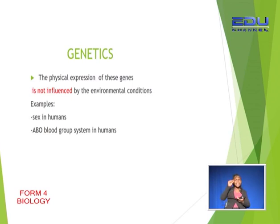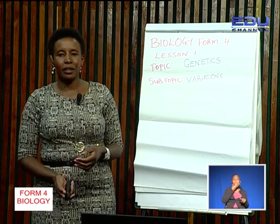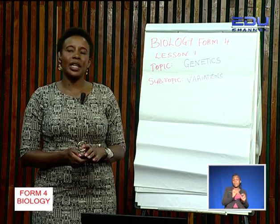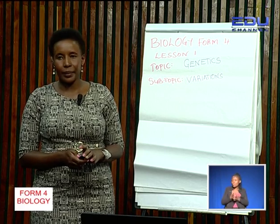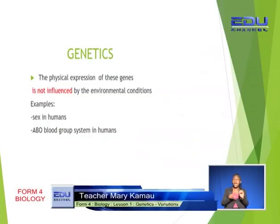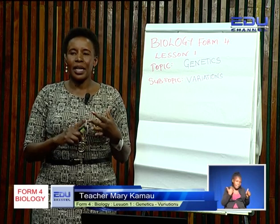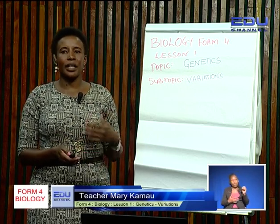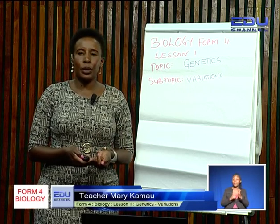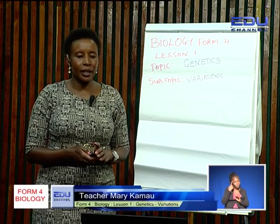Examples of discontinuous variations include, number one, sex in humans — you are either a male or a female, and being male or female cannot in any way be influenced by the environment. Number two, the ABO blood group system in humans — you can only be blood group A, B, AB, or O and no other. Hence, the ABO blood group system is a very good example of a discontinuous variation.